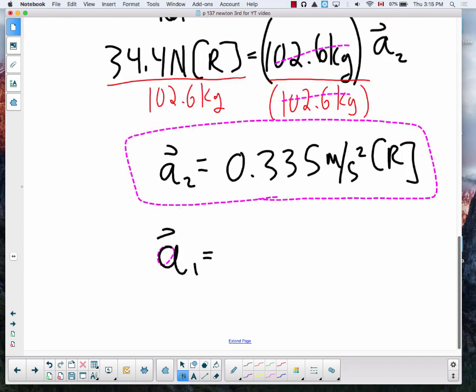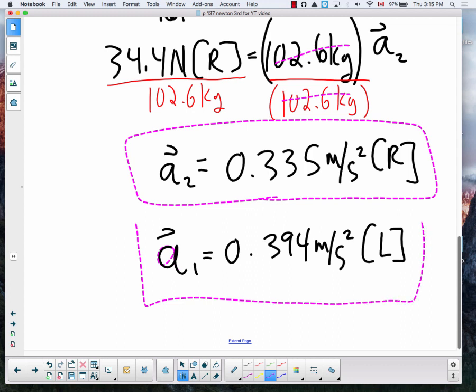And if you remember, the previous one gave us the acceleration of player one, which was 0.394 meters per second squared, but this was to the left. So this makes sense. Player one had less mass, which means they should have a slightly larger acceleration.